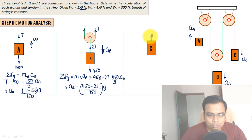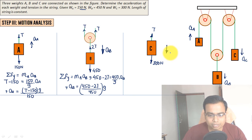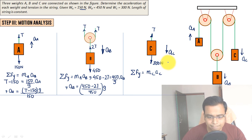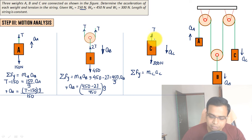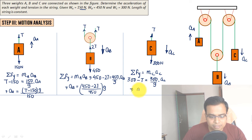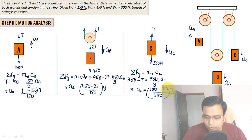For block C: tension T acts upward, weight 300N acts downward, motion is downward with acceleration a_C. Applying Newton's second law: 300 - T = (300/g)·a_C, giving a_C = (300 - T)·g / 300.